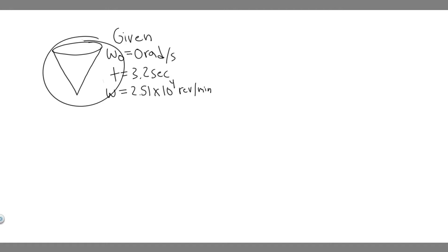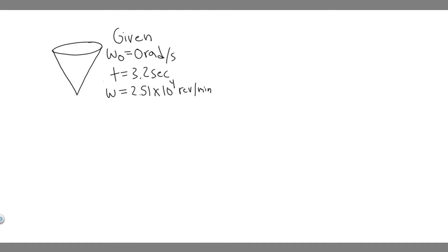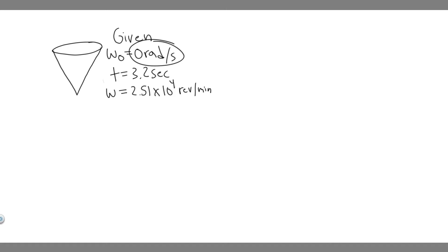Imagine this right here is our drill. What we want to do first is always write down the information we're given. This is going to be angular kinematics, so we just want to write down the angular kinematic variables we're given. In this case, it starts at rest, so the initial angular velocity omega-zero equals 0 radians per second.